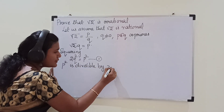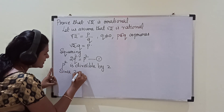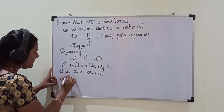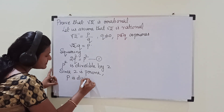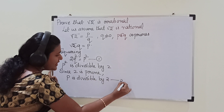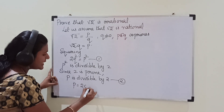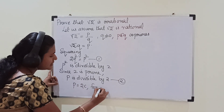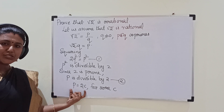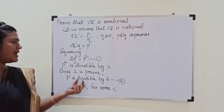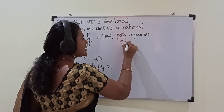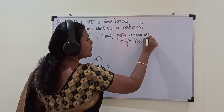Since 2 is a prime number, we can say p is divisible by 2. So we will take p = 2c for some integer c. Now we will substitute this value of p into equation 1. Then we get 2q² = (2c)², that is 2q² = 4c².